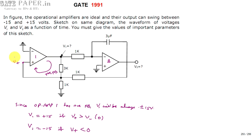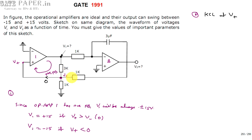Now, how do we get the value of V+? Apply KCL at the V+ node. We know that no current flows into the op-amp input. So currents flow only through the three branches connected to V+. For the first branch: (V+ minus 0) divided by 1K gives V+ divided by 1.